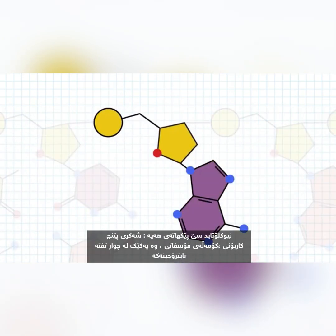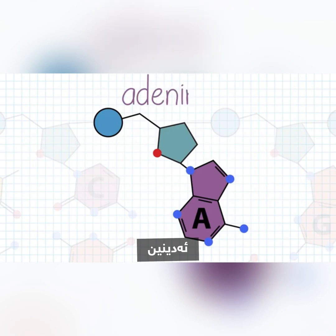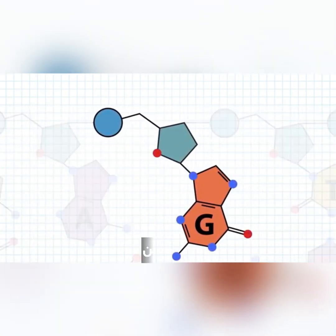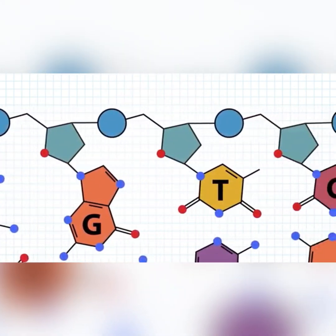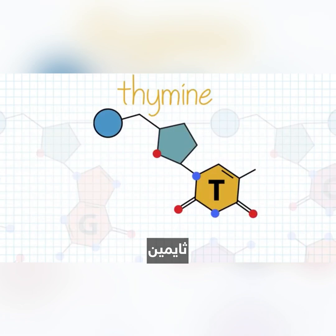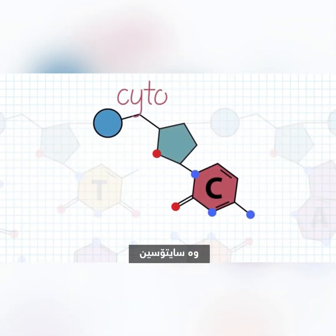A nucleotide has three components: the 5-carbon sugar, a phosphate group, and one of four possible nitrogenous bases — adenine, guanine, thymine, and cytosine.